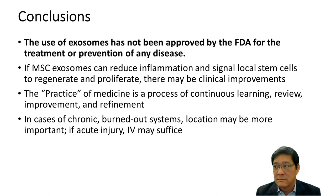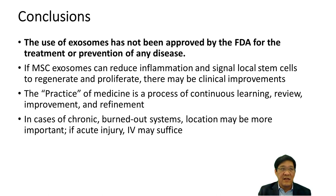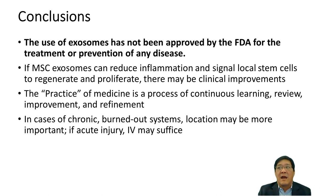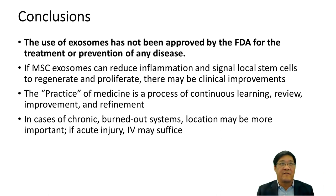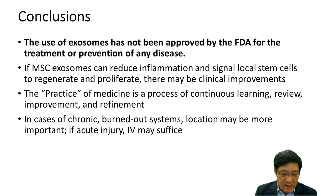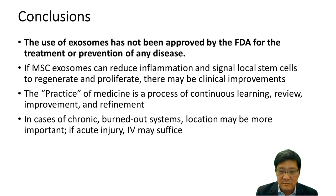Alan asks whether IV means a bag drip or a push injection. With certain things like cells, you want a slow IV — I'm doing a cell procedure with autologous stem cells and they recommend hanging it in a 100 CC bag. But with exosomes, it's just an IV push — it's not immunogenic and doesn't cause anaphylaxis. I do have epinephrine, steroids, a pulse oximeter, and ammonia salts available for resuscitation. So it's not a slow drip IV — it's a fast IV push.